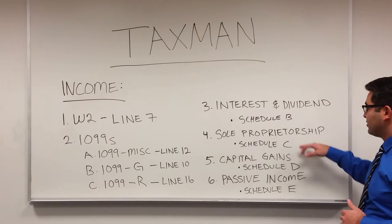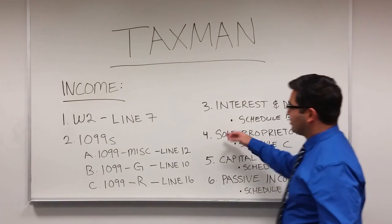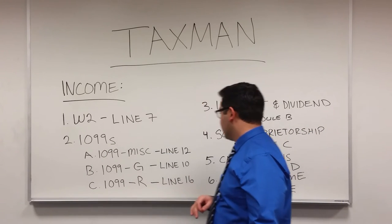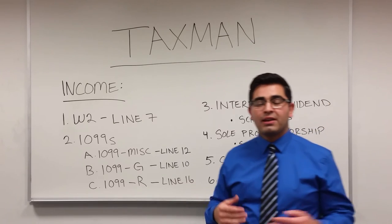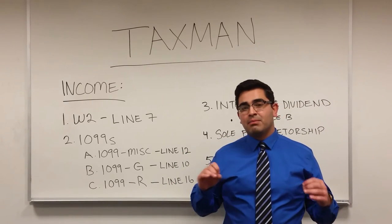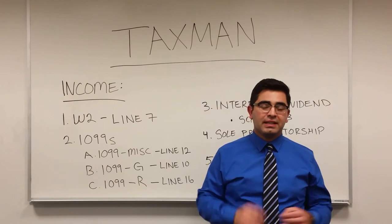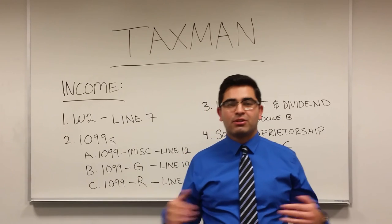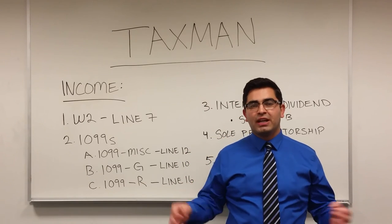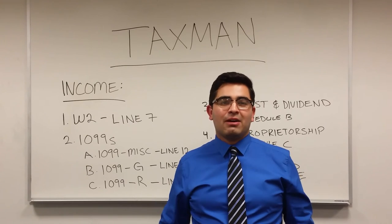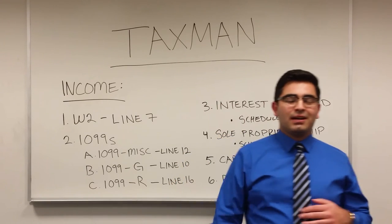Number four is sole proprietorship. This is directly related to the 1099-Miscellaneous. If you're a sole proprietor and you run your own business and are issued a 1099-Misc, then that is reported on Schedule C. It begins with your revenue, less any expenses such as advertising, marketing, depreciation, and all other expenses, and that will be reported on Schedule C of the 1040.